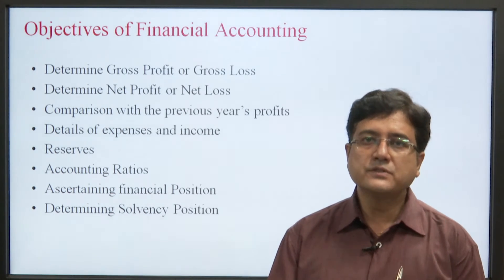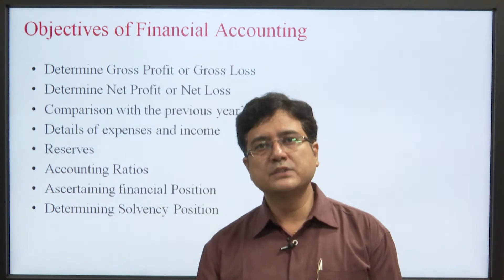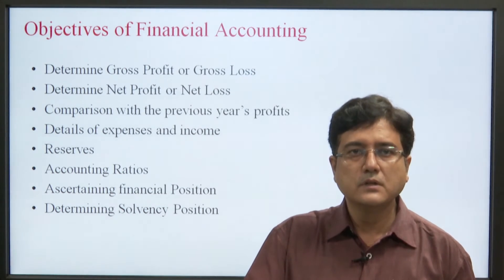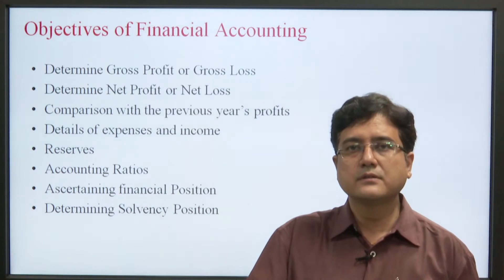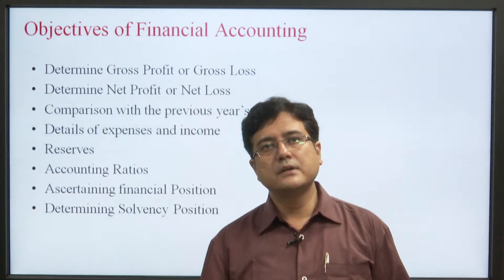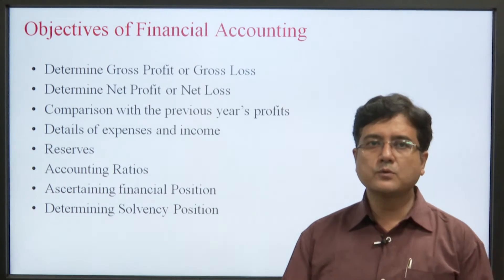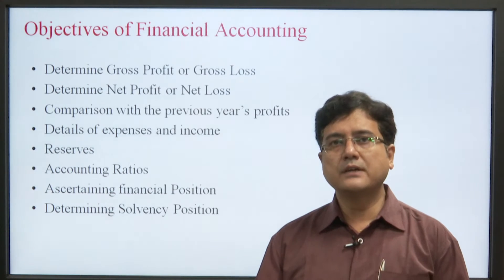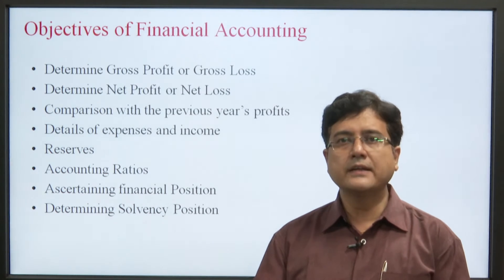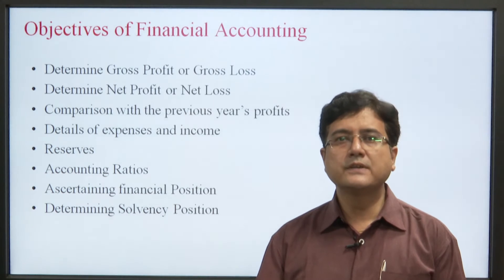The next objective is accounting ratios. There are different accounting ratios like current ratio, quick ratio, debt equity ratio, etc. These ratios are prepared with the help of financial accounting. Another objective is ascertaining the financial position — to understand what the financial position of a company is, we must have proper financial accounting. The objective is also to understand where a company stands, whether it is financially sound or facing financial crunches.